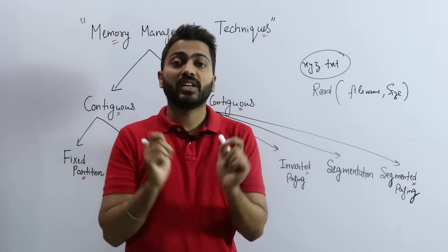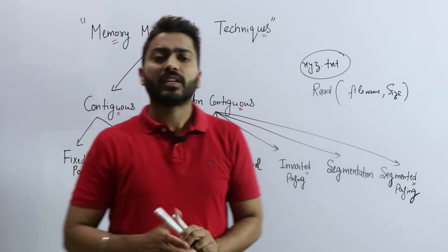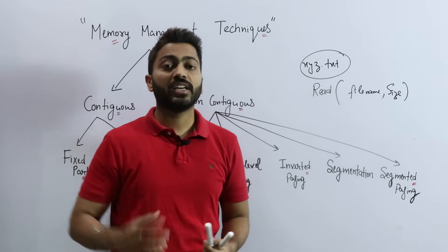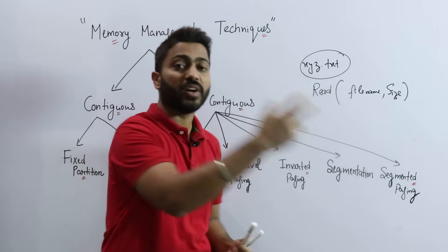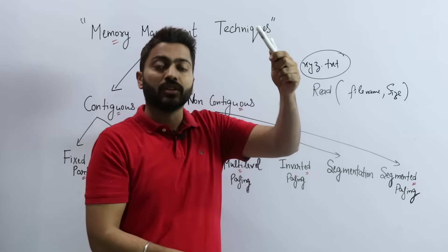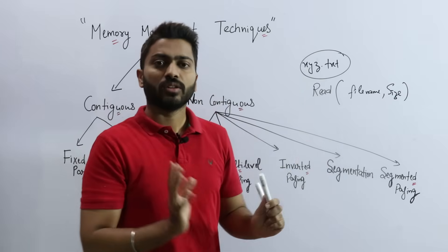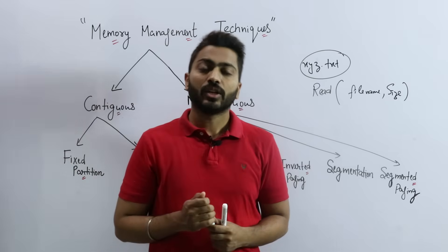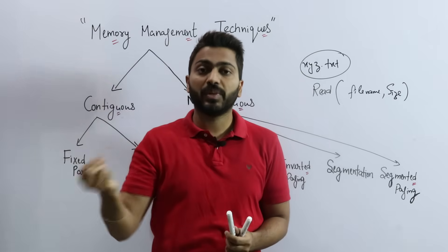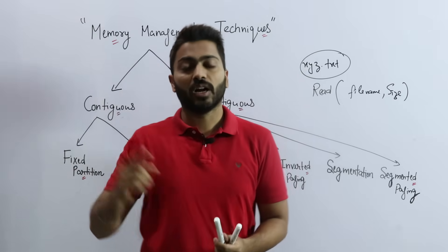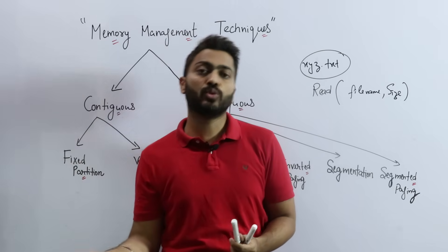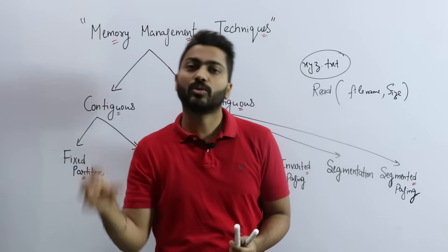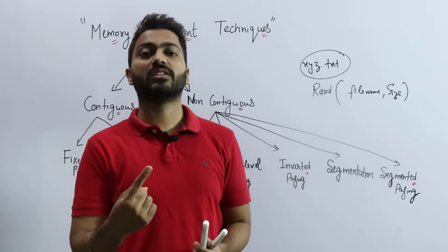This is a simple example of an input-output operation. When a process wants to perform an I/O operation — reading from a hard disk, accessing a printer, or accessing a monitor during execution — the CPU tells it to go execute that. Once the process goes out of the CPU's range, the CPU becomes idle. That is why we keep the degree of multi-programming high, so that whenever the CPU is about to be idle, we can allocate another process from the ready state to the CPU.